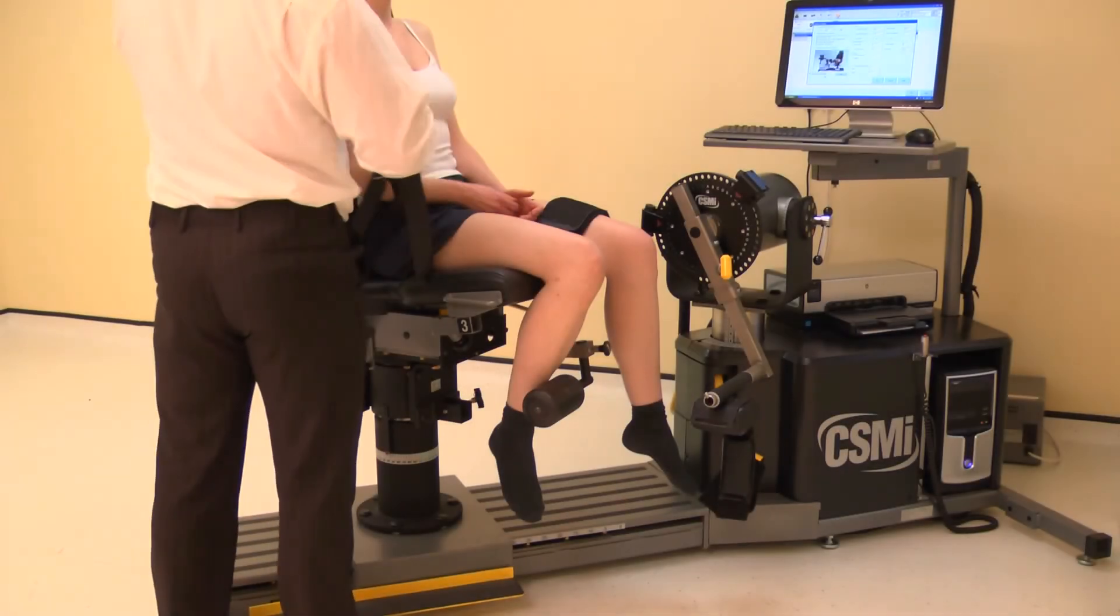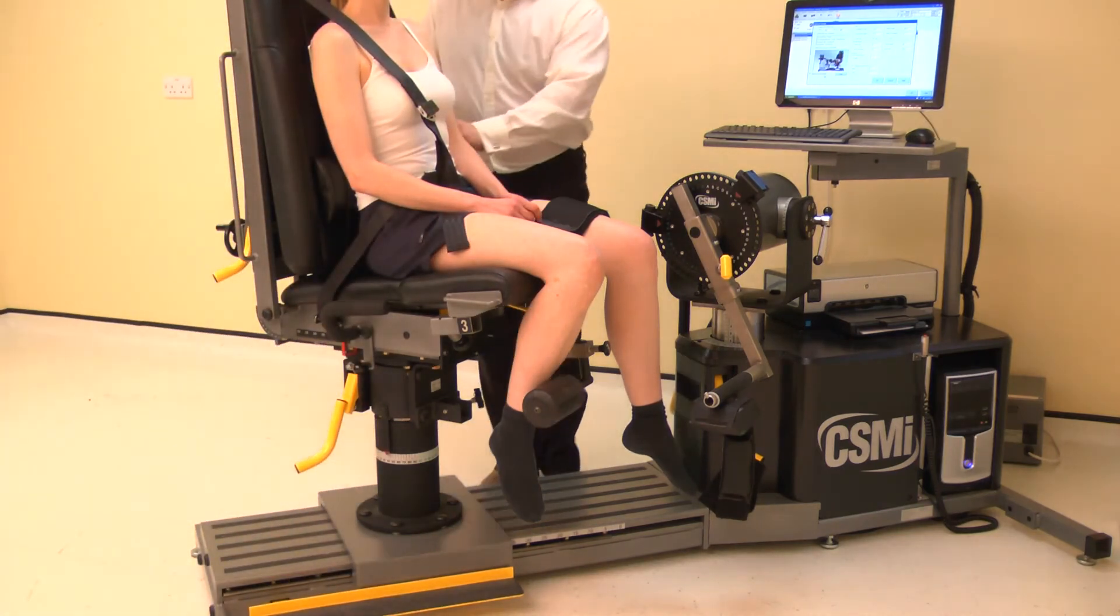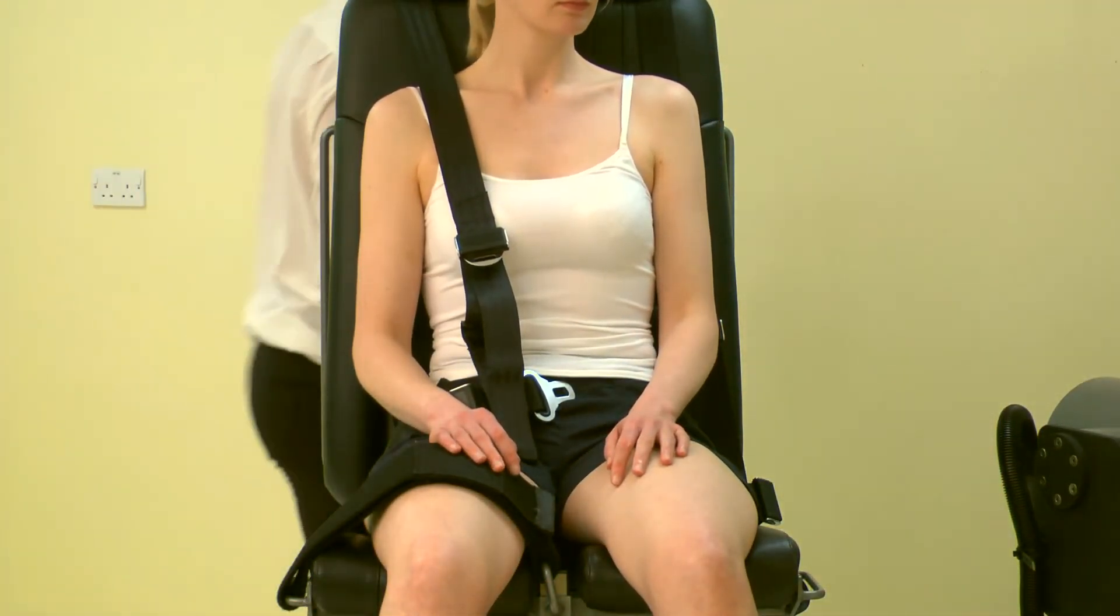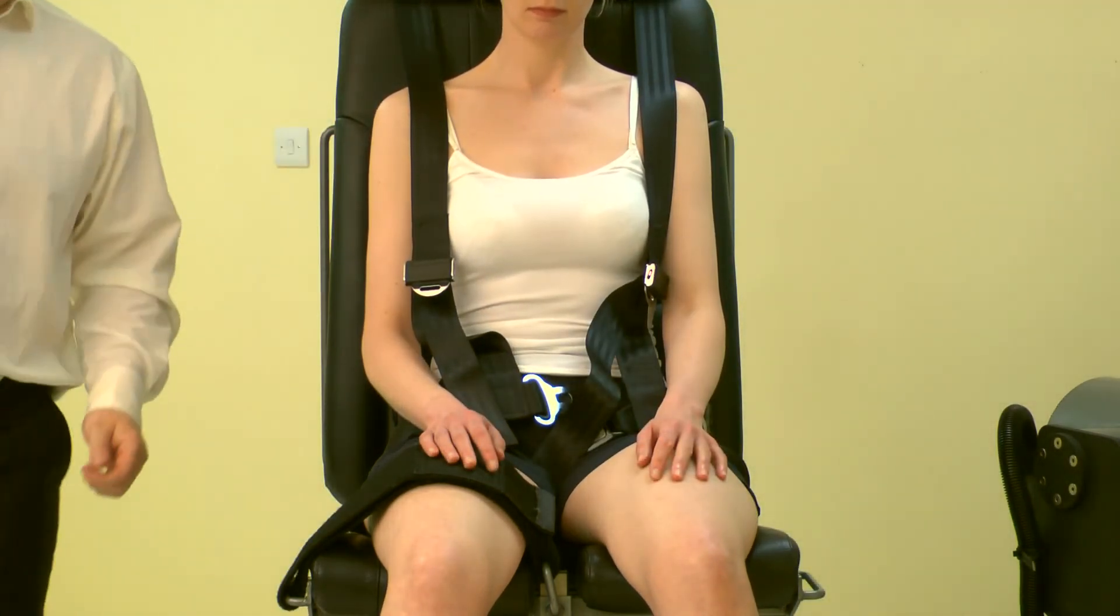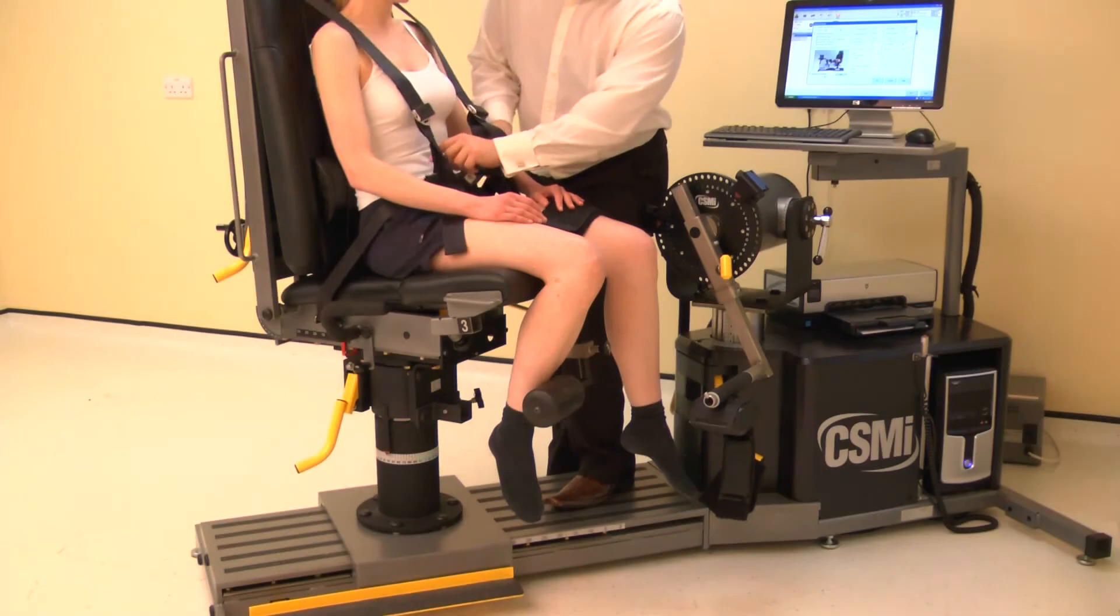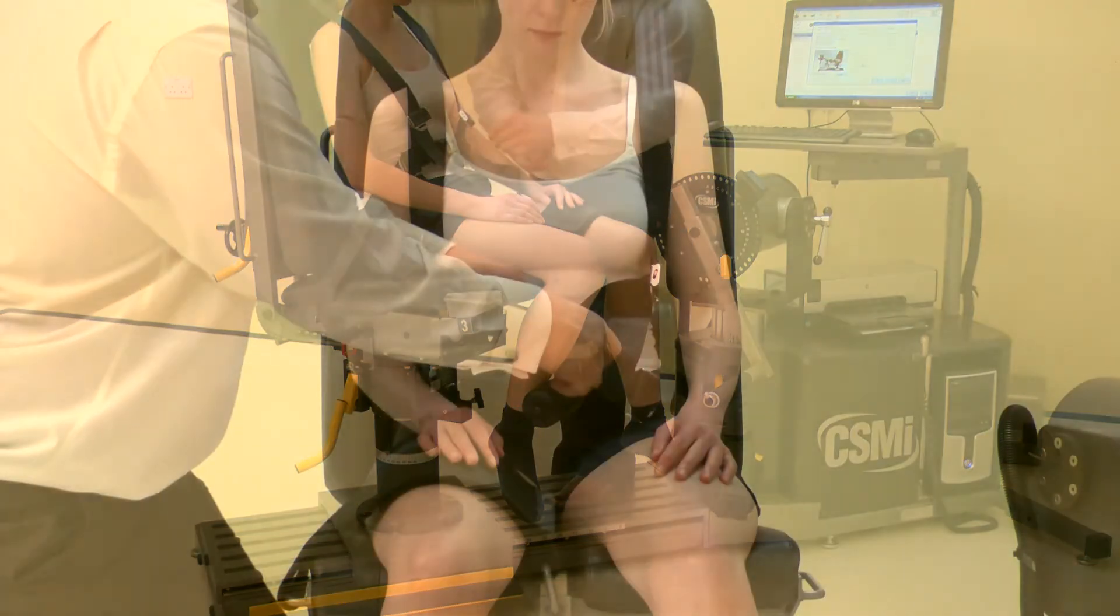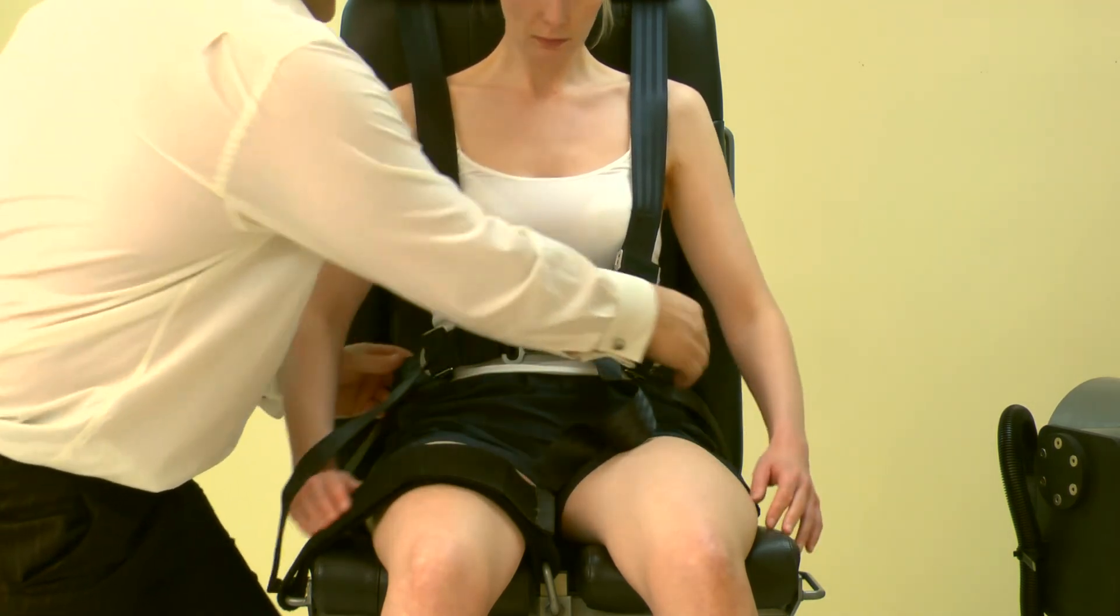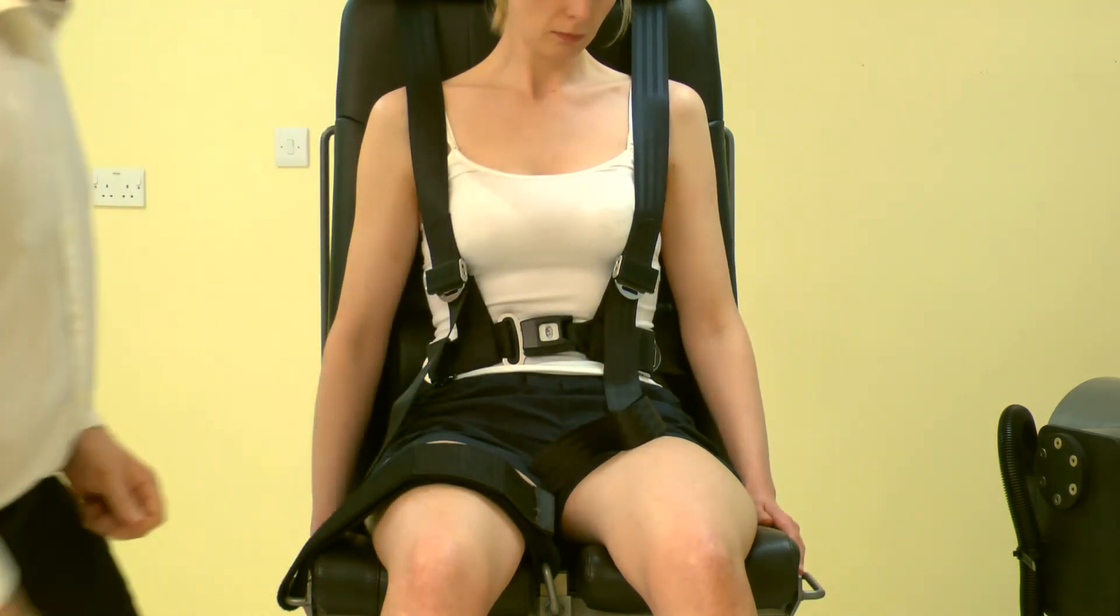To use the chest straps, first place both arms through the loops. Then clip the straps together using the clasp. Tighten the upper straps until the waist sections are above belt level. Now tighten the waist straps keeping the clasp centrally on the waist.